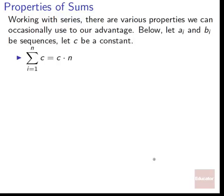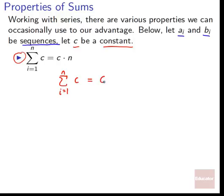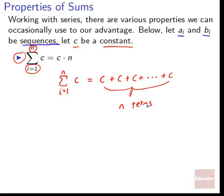There are various properties of sums we can use to our advantage. First: the sum from i equals 1 to n of c (a constant) equals c times n. Since c doesn't change — it's not affected by the index — it's just c plus c plus c, showing up n times. So if c adds to itself n times, that's just c times n.